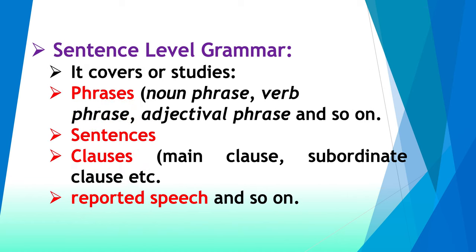Now we have sentence level grammar. At sentence level grammar, it covers or studies: number one, phrases — noun phrase, verb phrase, adjectival phrase, and so on; number two, sentences; number three, clauses — main clause, subordinate clause, adjectival clause and so on; and also reported speech. What we mean to say is that at sentence level when we study grammar, we discuss phrases, sentences, clauses, and reported speech. These are the two levels of studying descriptive grammar.